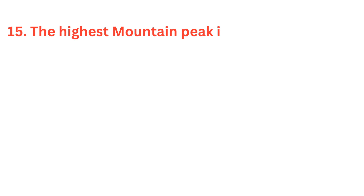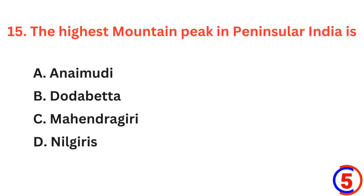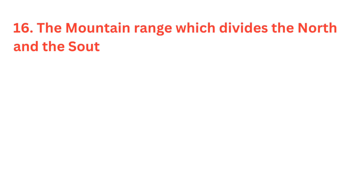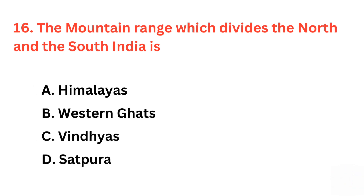The highest mountain peak in peninsular India is? The correct answer is option A, Anaimudi. The mountain range which divides the north and the south India is? The correct answer is option C, the Vindhyas.